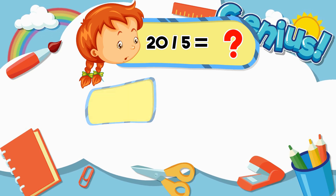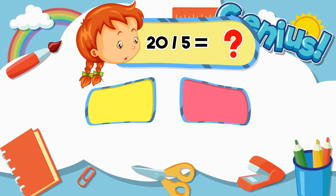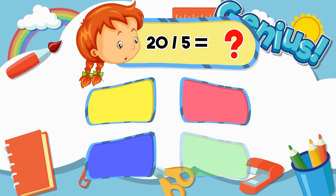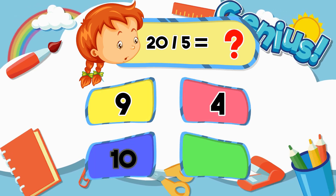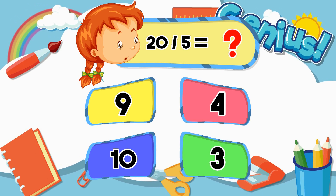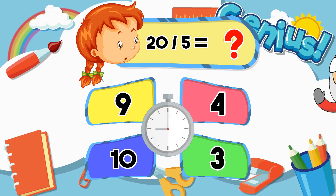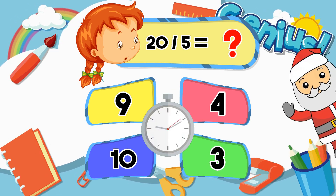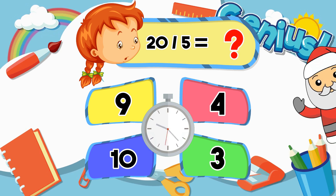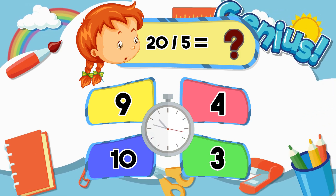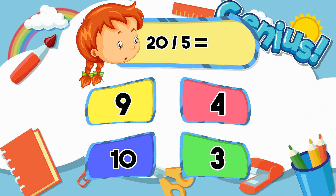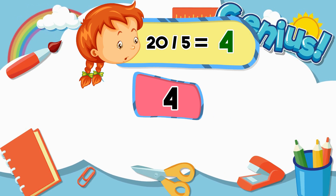What is twenty divided by five? Nine. Four. Ten. Three. Four.